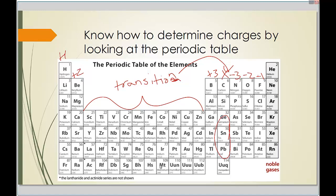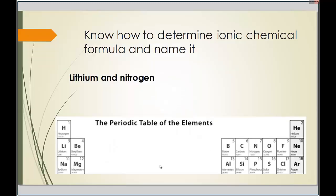Some transition metals like tin and lead can be plus two or plus four, so you need to look at the chemical formula or be told their charges. Once we figure out charges from the periodic table, we can determine the chemical formula. For example, lithium is plus one and nitrogen is minus three. Using the crisscross method, Li gets the 3 and N gets the 1 — but we don't write the 1, so the formula is Li₃N.